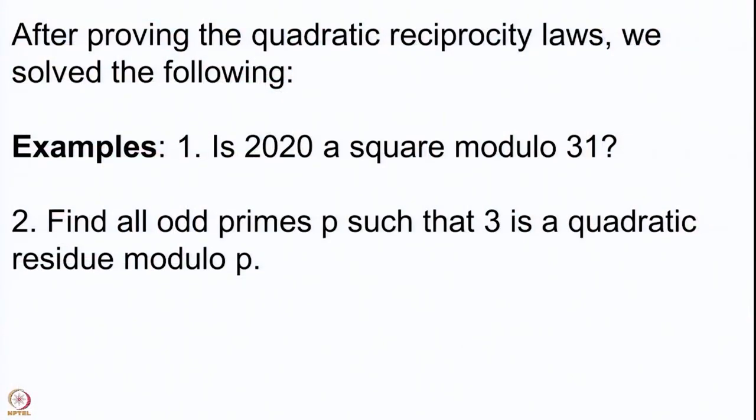We computed whether 2020, the current year, is a square modulo a prime — for example, modulo 31. And then we also saw that we could find all odd primes p such that 3 is a quadratic residue modulo p. That means the Legendre symbol (3/p) is 1. We found all such primes p; this was given by certain congruence relations. There were arithmetic progressions where all primes in those progressions gave us that 3 is a square modulo p, and other progressions where 3 is not a square modulo p.